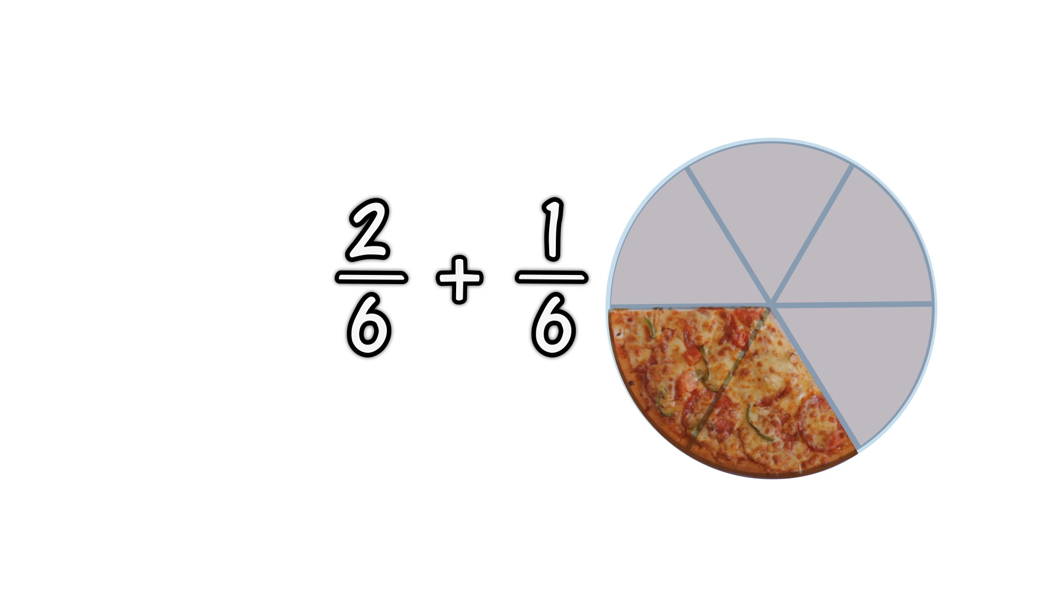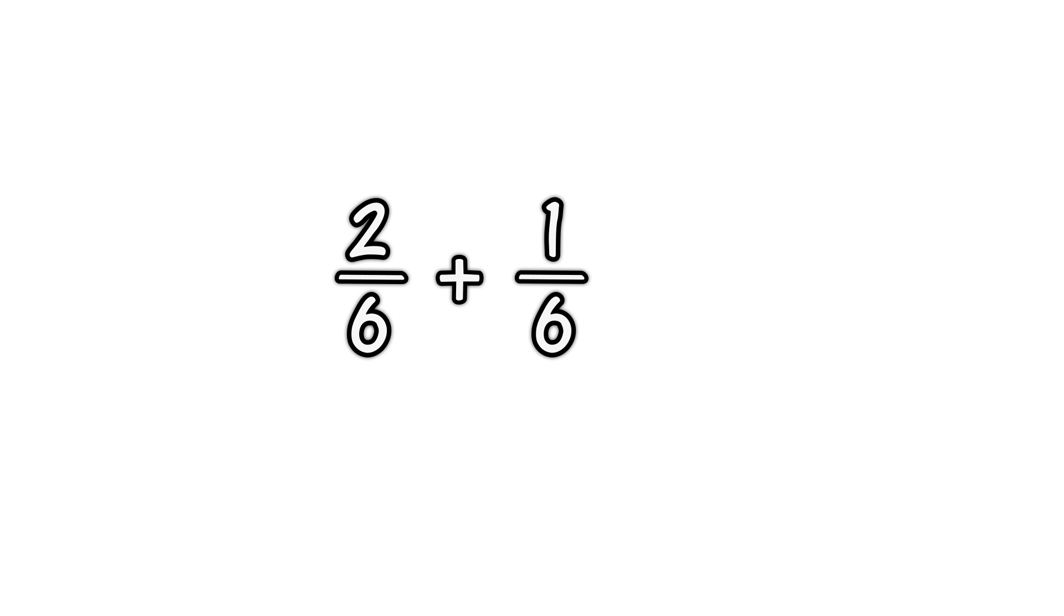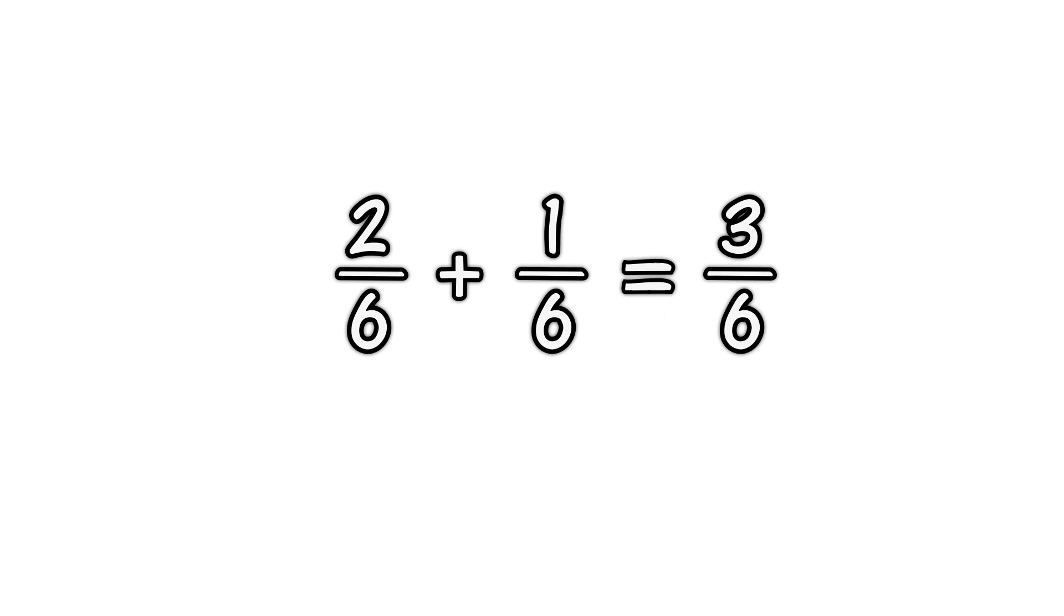Now the fractions have the same bottom number, 6, and we can go to step 2. Step 2: Add the top numbers and put them over the same denominator. 2/6 + 1/6 = 3/6, which looks like this.